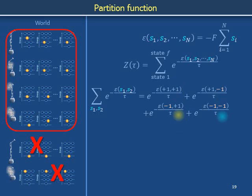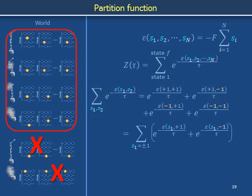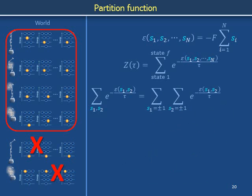In the first row of terms the first slots are both plus one, and in the second row the first slots are both minus one. The sum over four terms can be written as a sum using index S1. Within the parentheses, the only difference between the two Boltzmann factors is in the second slot of the energy function — it's plus one in the first Boltzmann factor and minus one in the second. This pair of Boltzmann factors in the parentheses can themselves be viewed as a sum over index S2. Summing over the states of a pair of links is equivalent to a pair of nested sums over the states of individual links. We say nested because the outer sum with index S1 eats whatever results from first doing the inner sum with index S2.